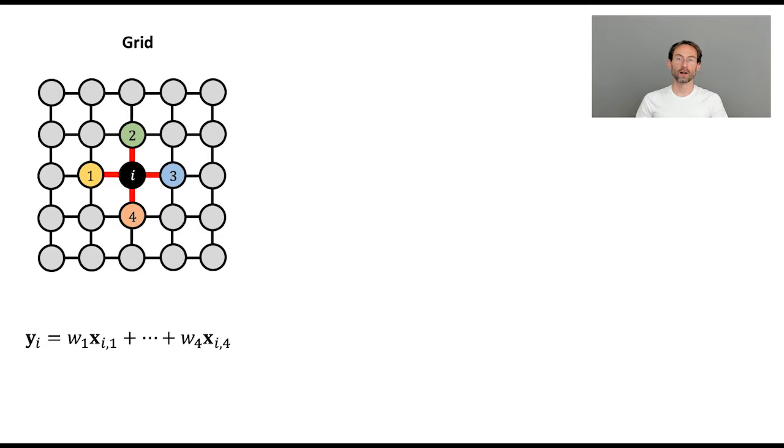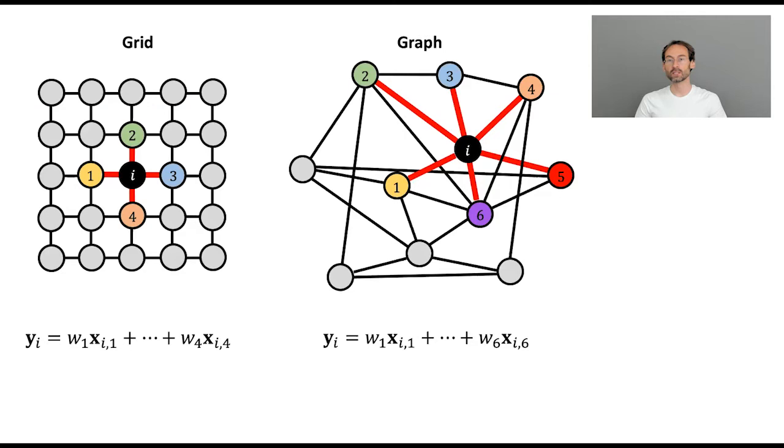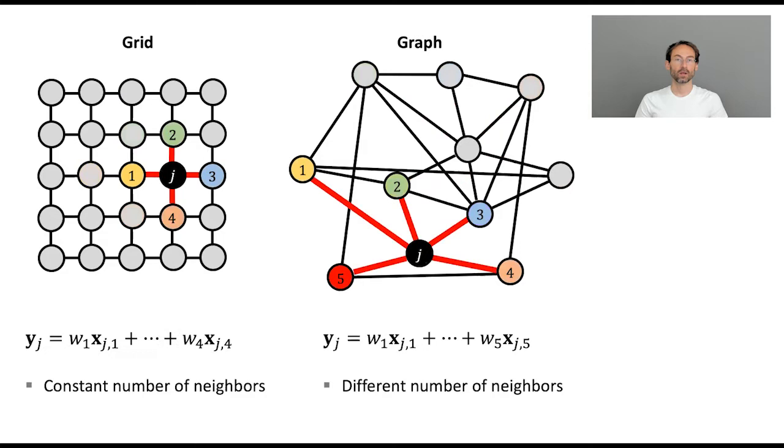They take as input an image, which we can define as some function of a two-dimensional grid. I denote it by X here. Think of the color of the pixels. And what convolution does is a weighted aggregation of the values of the pixels in the neighborhood. We can do the same thing in a graph. The neighbors will be the nodes that are attached by edges to my node. And so far, it looks exactly the same.